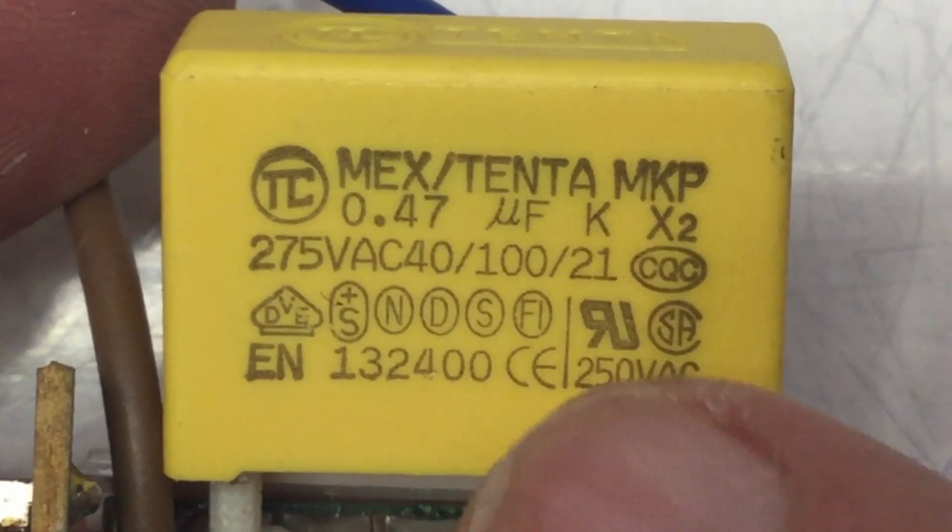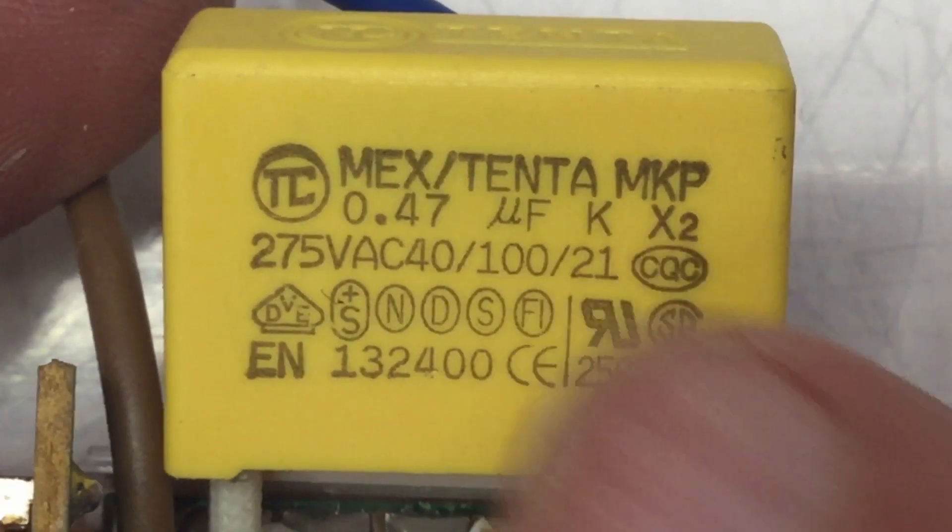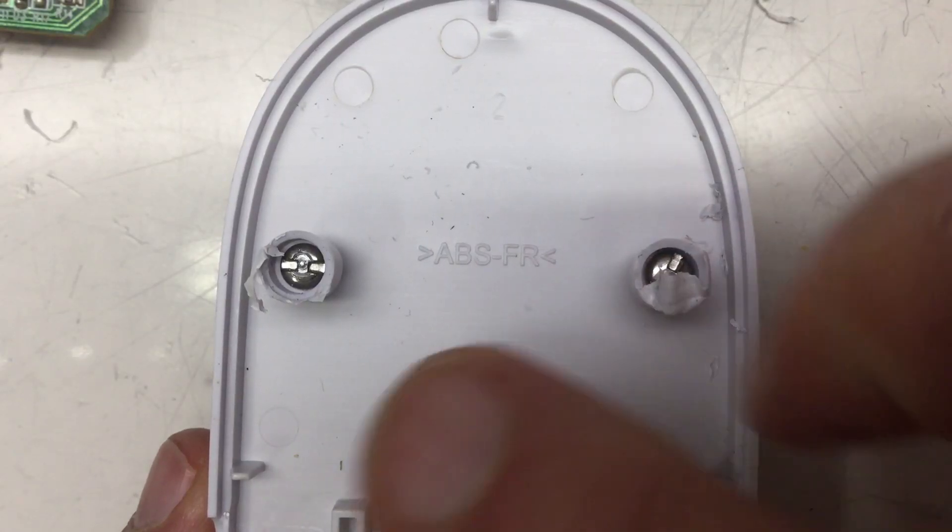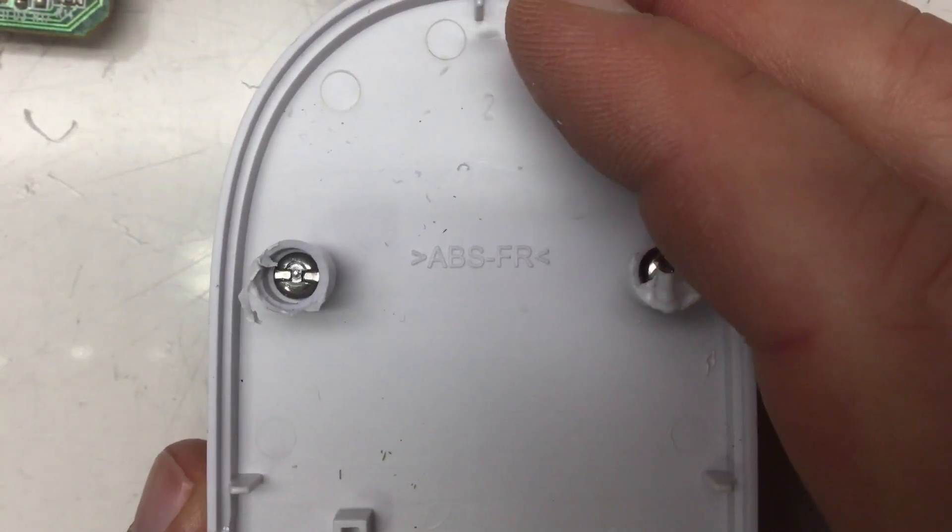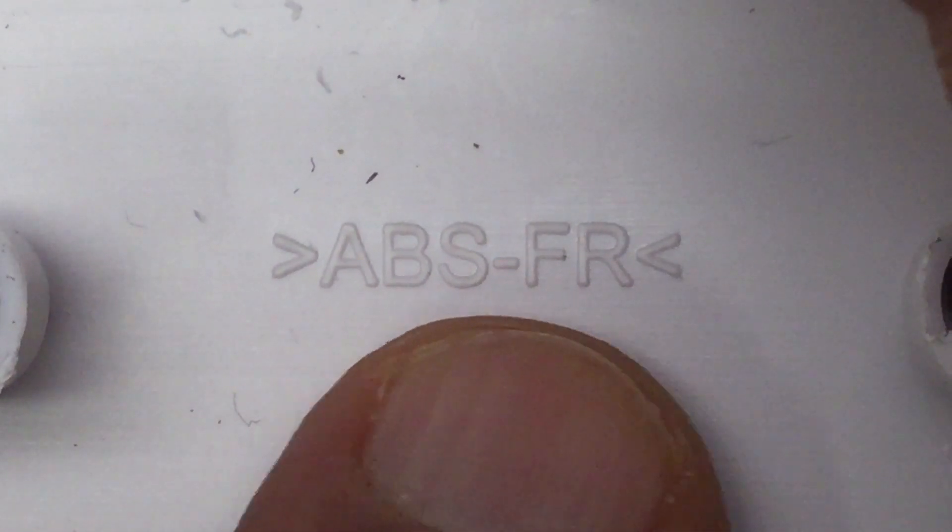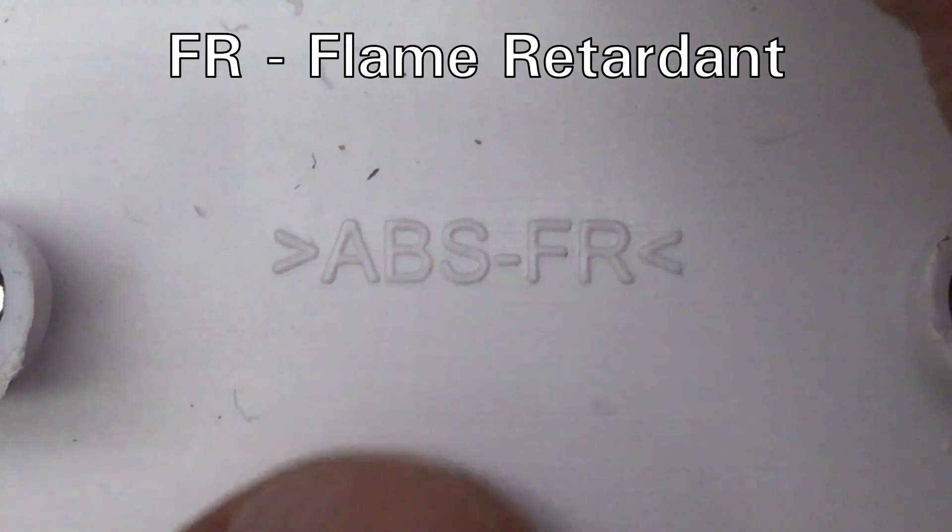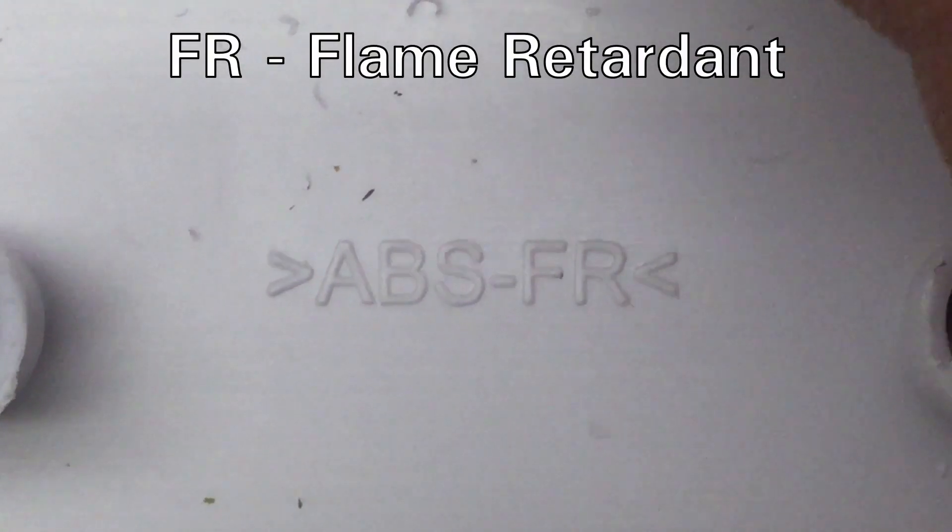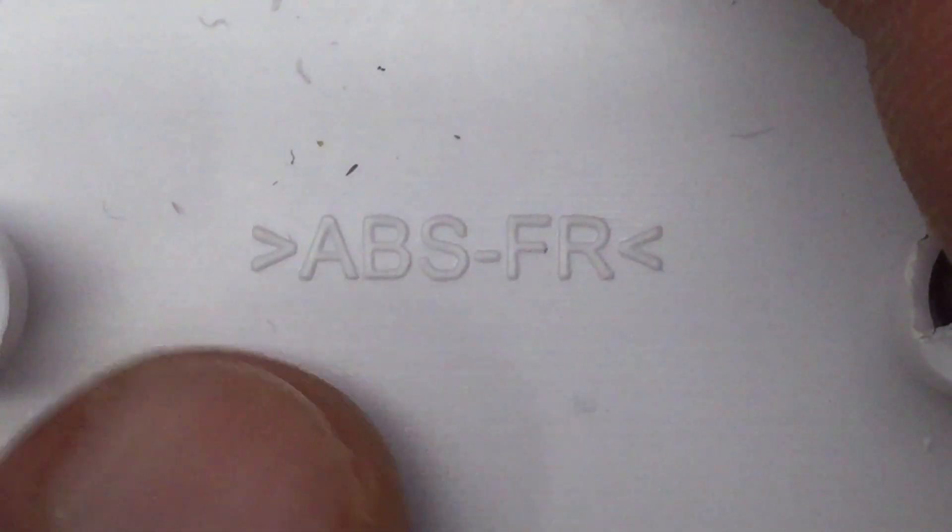Means that thing was probably not made in China. And if you're wondering what soft material the housing is made of, it's ABS-FR. So ABS. Your typical 3D printing material.